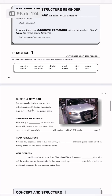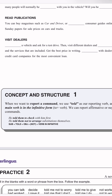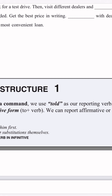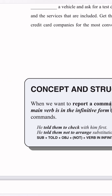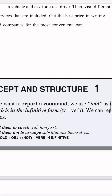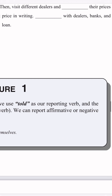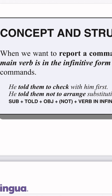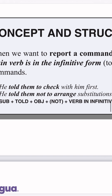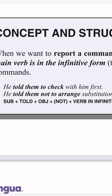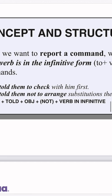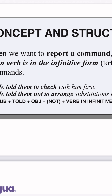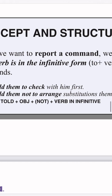We have practice number one, and concept and structure number one. When we want to report a command, we use 'told' as our reporting verb, and the main verb is in the infinitive form: 'to' plus the verb. We can report affirmative or negative commands. For example: he told them to check with him first. He told them not to arrange substitutions themselves. The structure is: subject + told + object + (not) + verb in infinitive.